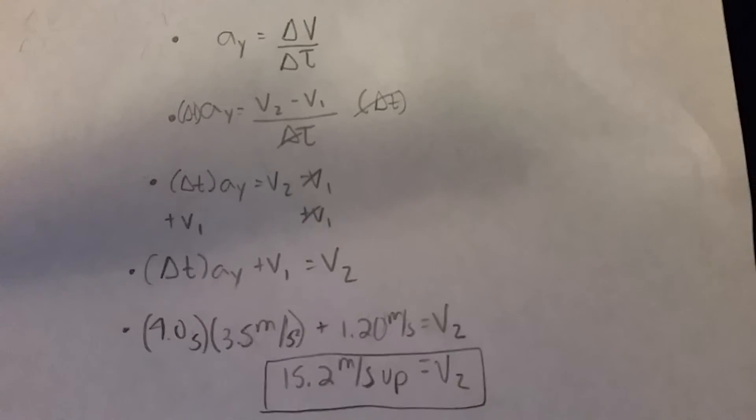Alright, for the second part, it wants to find the elevator's velocity four seconds later. So I'm going to use the formula of acceleration, which is change in velocity over change in time. Which is ay equals v2 minus v1 over delta t.